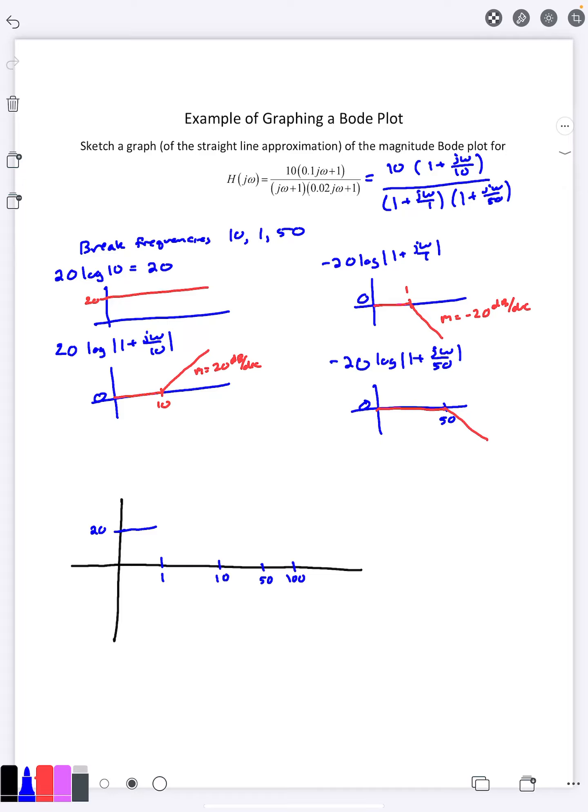Once I reach the break frequency of one that came from over here, that means I'm going to start going down and I'm going down 20 decibels per decade. What that means is in one decade from one to 10, I'm going to go down 20. Since I started out at 20, this is going to go all the way straight down here to 0.